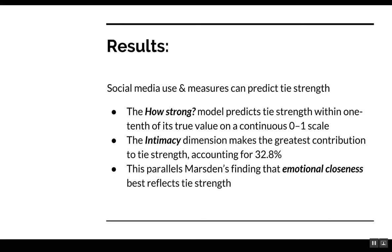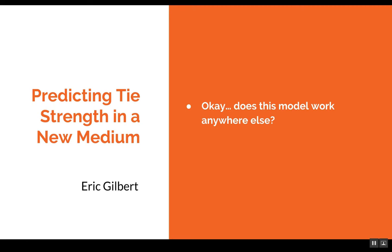Marsden had written earlier asking this same question—what factors can we use to predict tie strength? He found that emotional closeness, a kind of combination of all these other ones, best reflects tie strength. The important thing from that paper we just looked at was that it was predicting tie strength in Facebook. That was Eric Gilbert and his advisor Kerry Karahalios at Illinois. Eric then goes to Georgia Tech and basically does the same kind of work using the same model on Twitter.